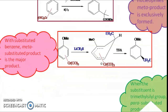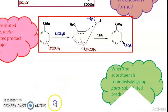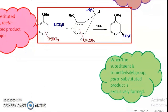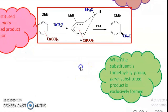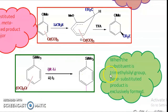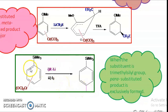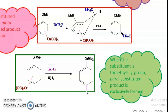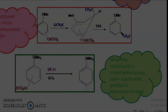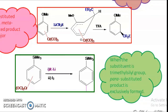When the substituent on the arene ring is a trimethylsilyl group, you get exclusively the para product — this is an exception from the general rule. So with a trimethylsilyl-substituted arene complex, treating with an alkyl-lithium nucleophile gives the alkyl group attached at the para position. That is how the nucleophile gets attached onto the aryl-chromium complex.